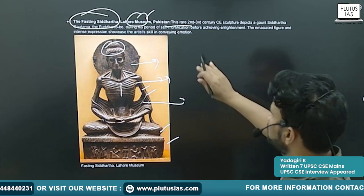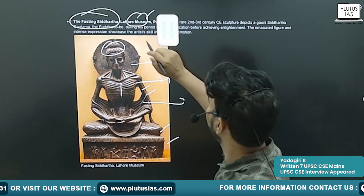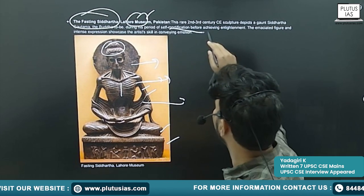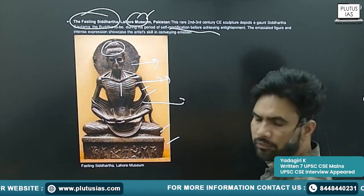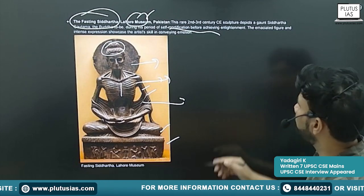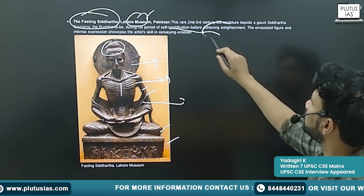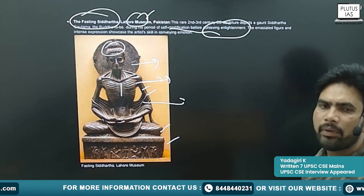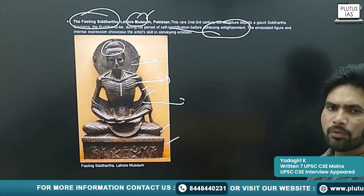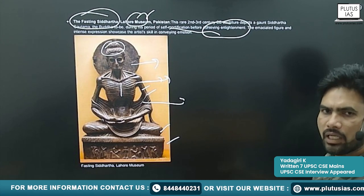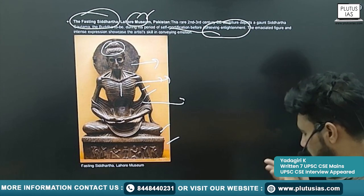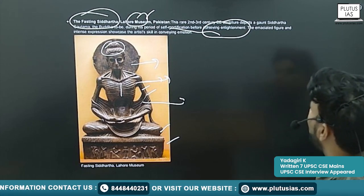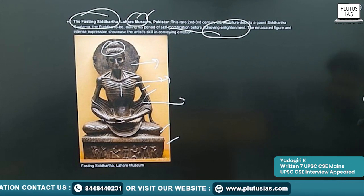This Buddha represents the period of self-mortification of Buddha — before he achieved enlightenment, just a few days before he achieved it.